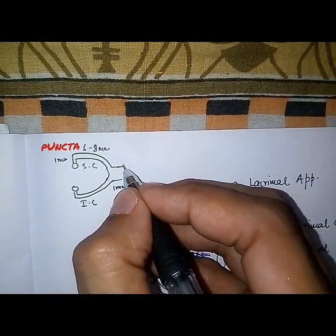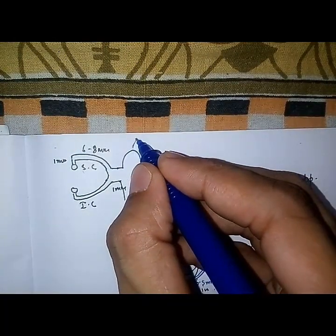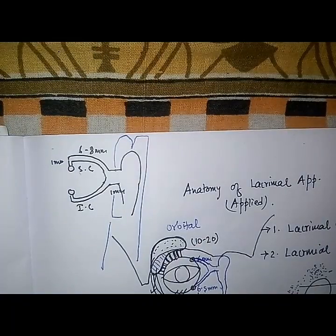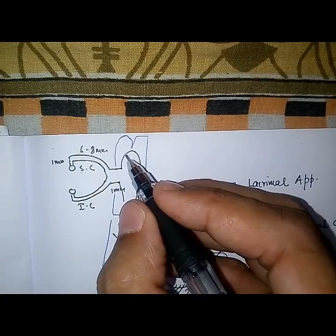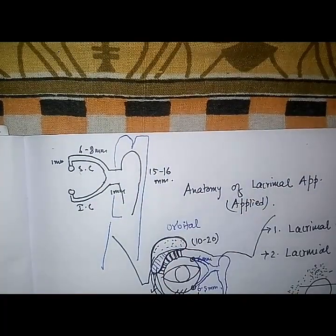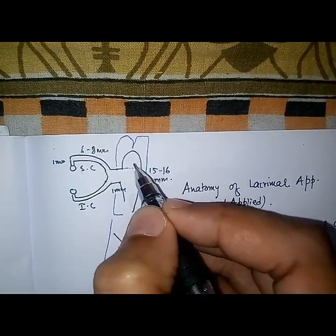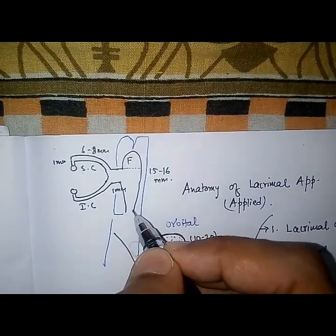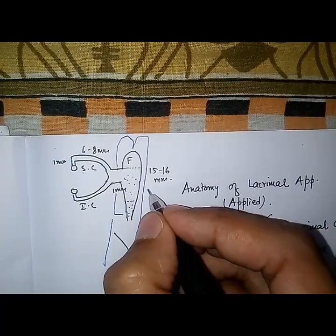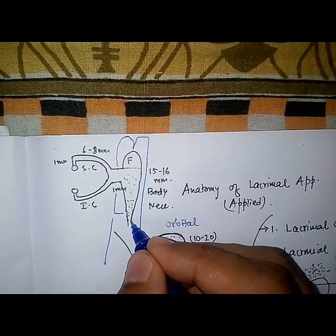The lacrimal sac is situated between the frontal process of the maxilla and the lacrimal bone, in the lacrimal fossa. In its extended position, it is 15 to 16 millimeters in length. The lacrimal sac has three parts: the upper portion known as the fundus, the body, and the narrow lower portion known as the neck.